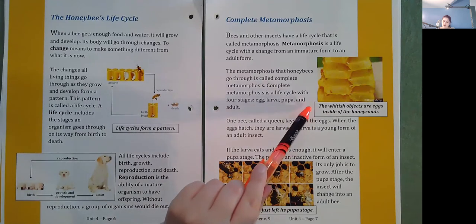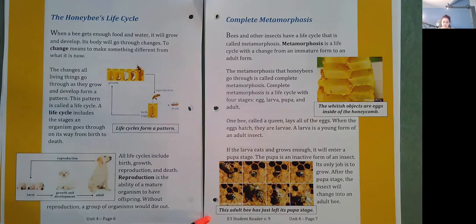The whitish objects are eggs inside the honeycomb. And then it says here that this adult bee has just left its pupa stage.